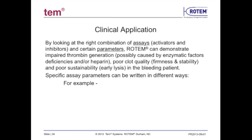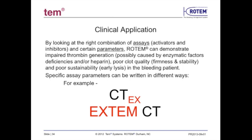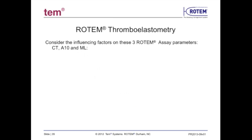Applying this information in the clinical setting is simply a matter of looking at the right combination of tests and parameters to evaluate thrombin generation, clot stability, and early lysis. In examples of normal results — with Intem, Extem, and FibTem on a patient sample — we can quickly assess normal thrombin generation because of relatively short CTs, good rate of clot formation, and amplitudes well into the 50 mm range in Intem and Extem, and about 10 mm in FibTem.